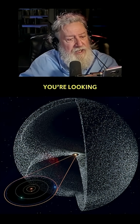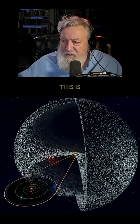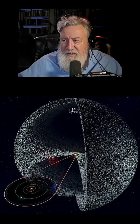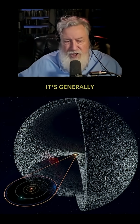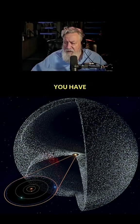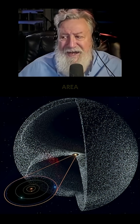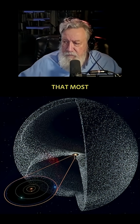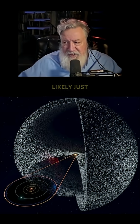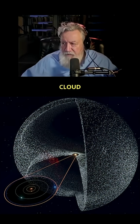What exactly it is you're looking at — you can see here, this is like a sphere. This is the Oort cloud; it's generally spherical. Then you have the Kuiper disk as a flattened area that most likely just grades into the spherical cloud.